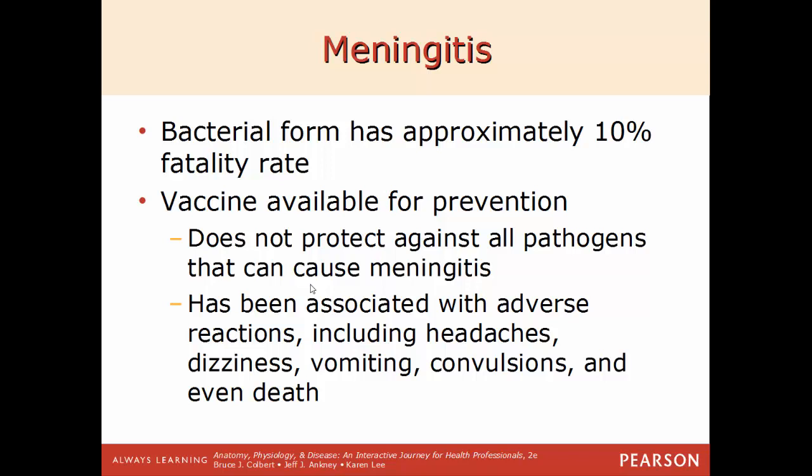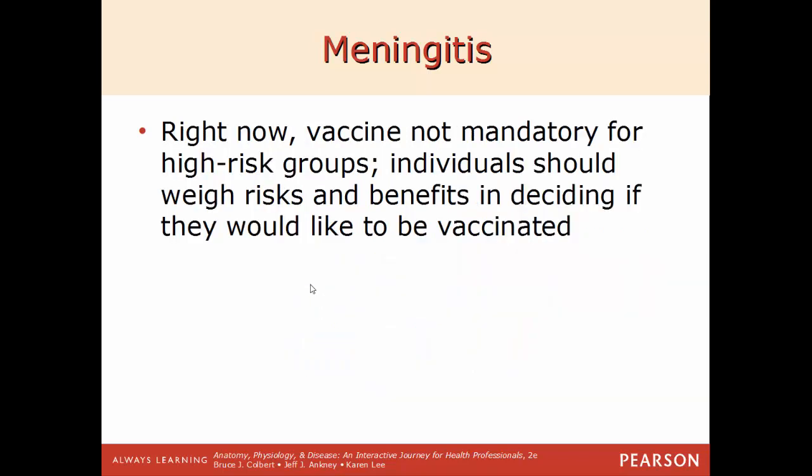Currently a vaccine is not mandatory for high-risk groups, but people should weigh the risks and benefits. It's possible you may contract the disease and never develop symptoms. The vaccine may not protect you from the particular strain contracted — if you get a vaccine for the viral kind and contract bacterial meningitis, it won't help. You may also get severe reactions to the vaccine. So it just depends on whether you think it's worth it to be vaccinated.